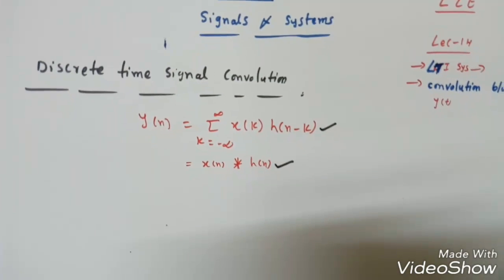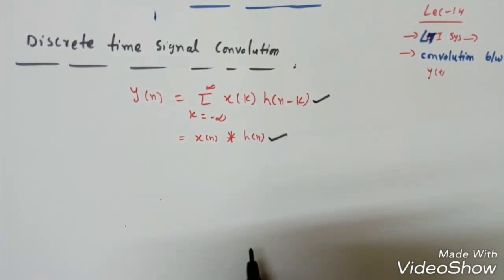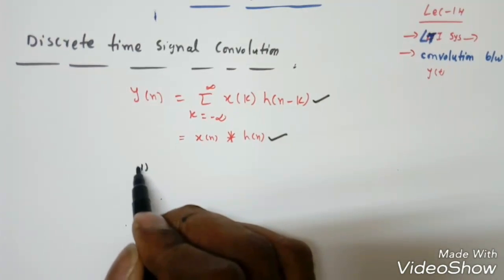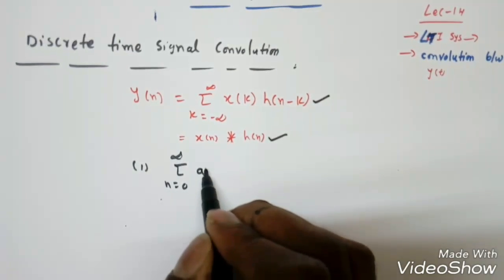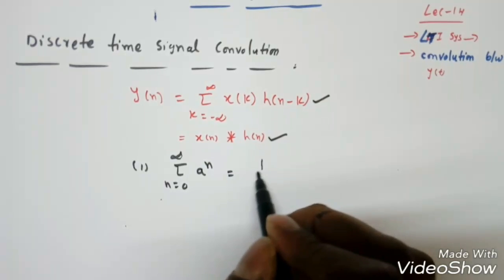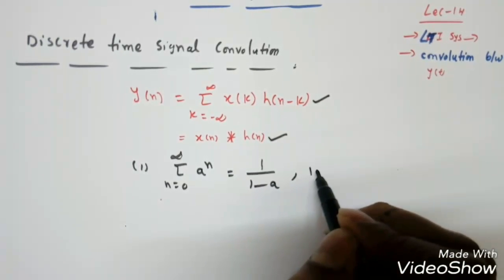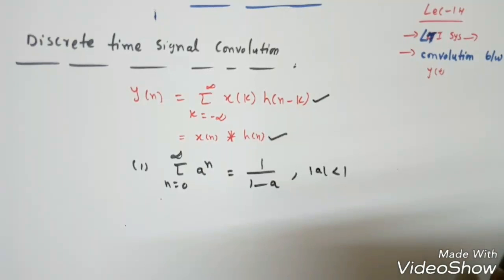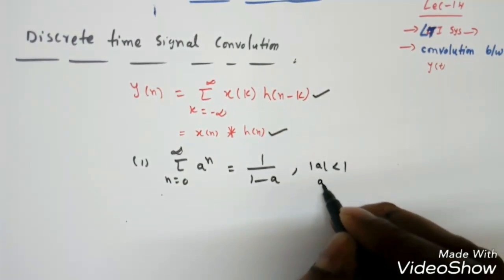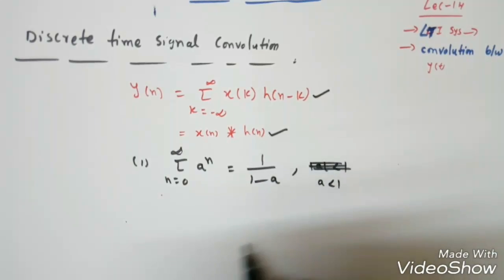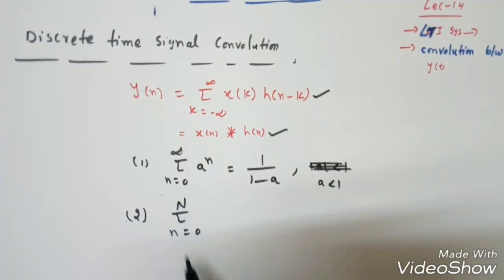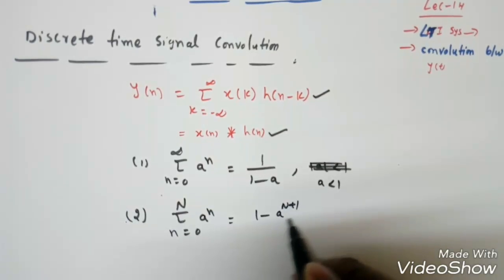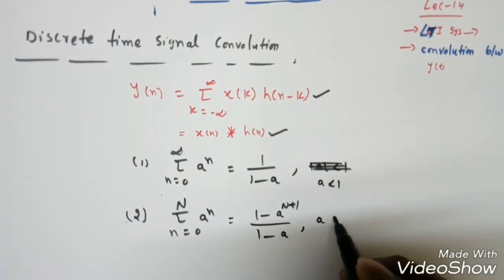Whenever we solve discrete-time signals we need three formulas. The first: Σ (n=0 to ∞) a^n = 1/(1−a), when |a| < 1. The second: Σ (n=0 to N) a^n = (1 − a^(N+1)) / (1 − a), again with a < 1.